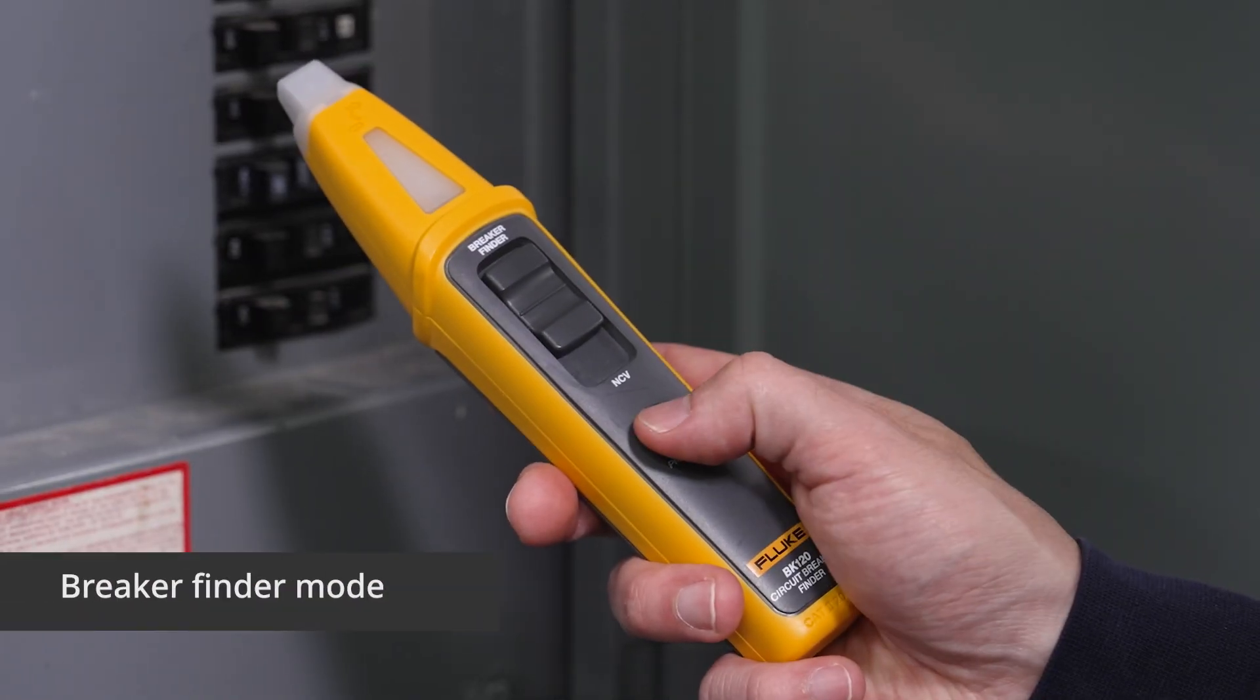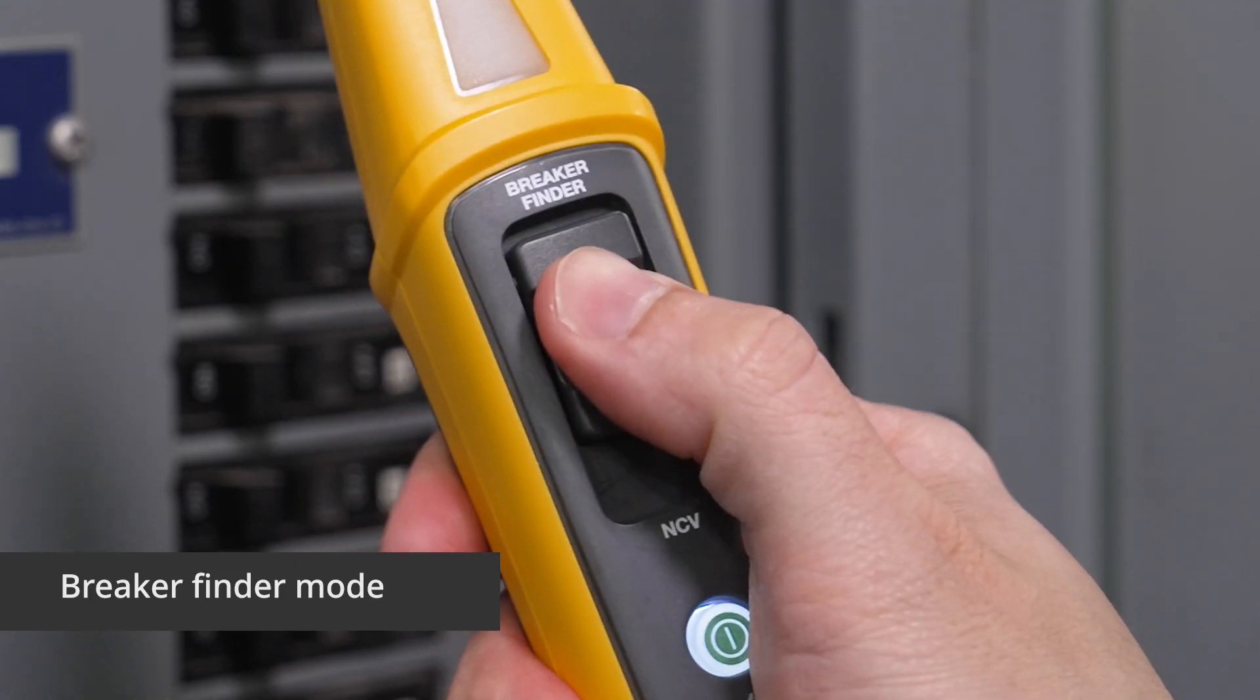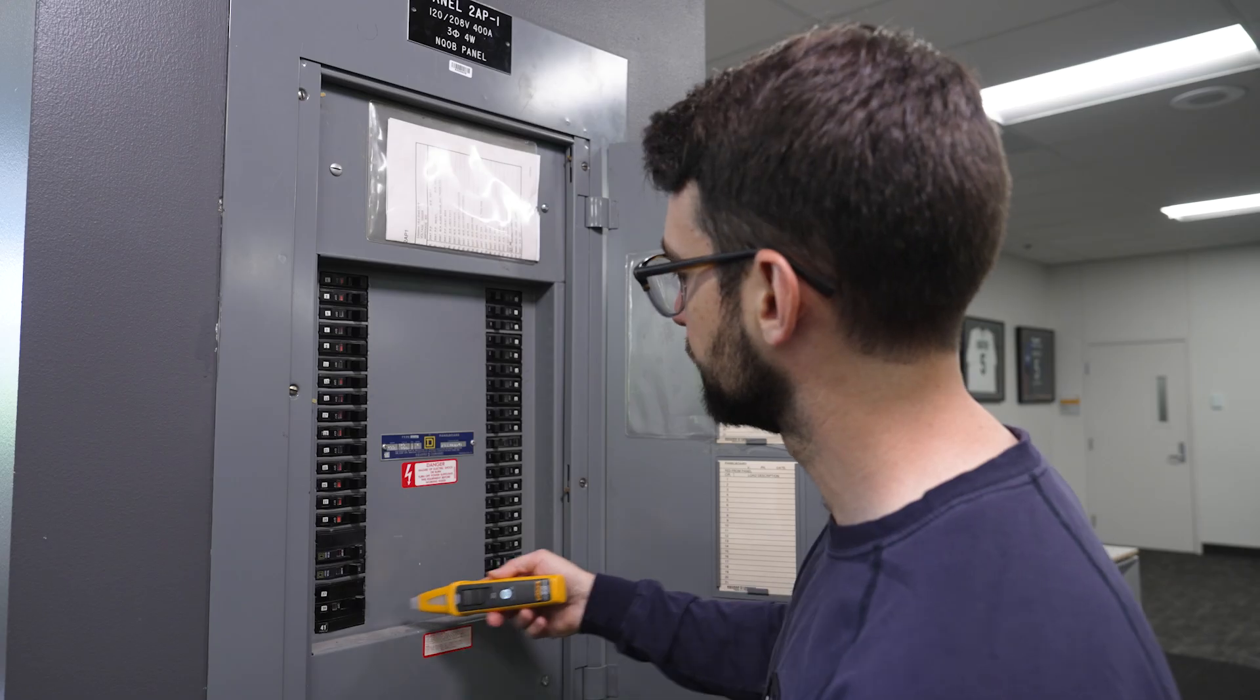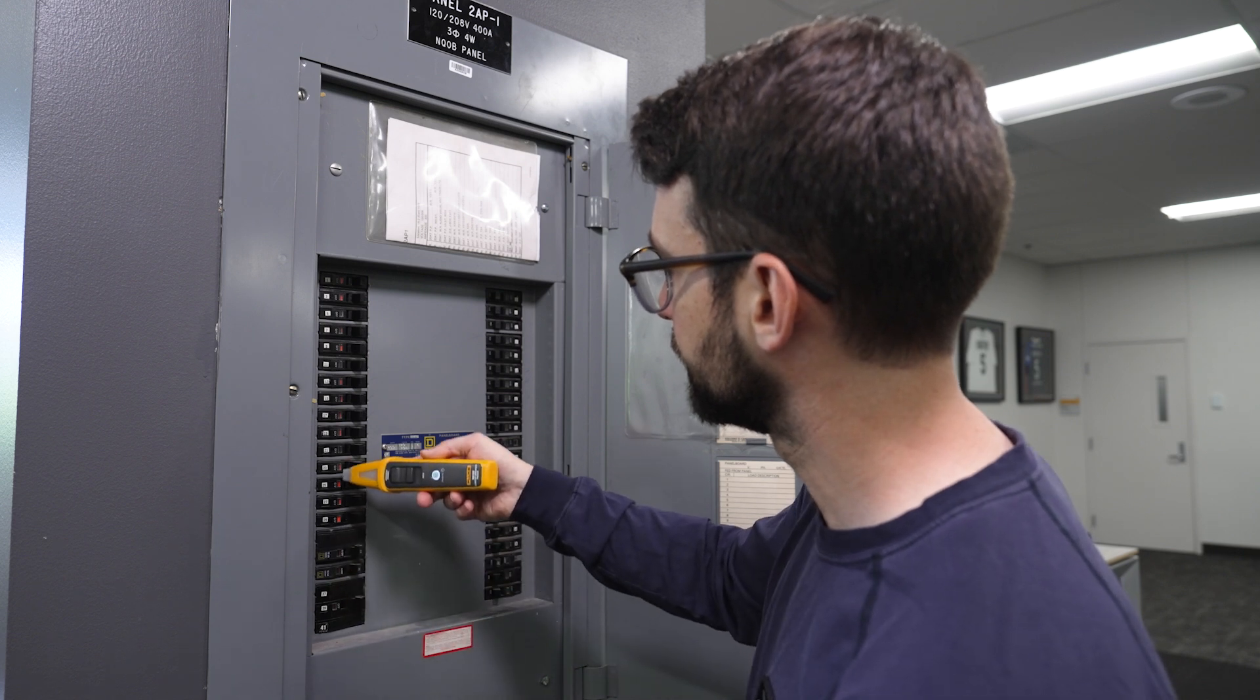Next, turn on the breaker finder and slide the function selector. Slowly scan the panel with the flat surface of the tip, keeping the BK120 perpendicular as you go.